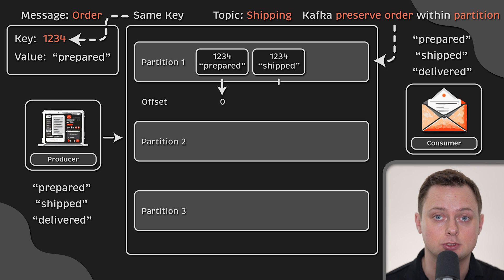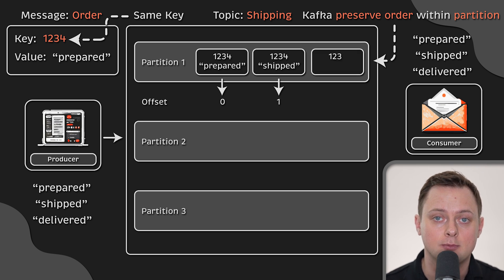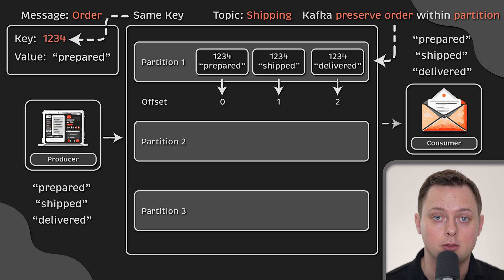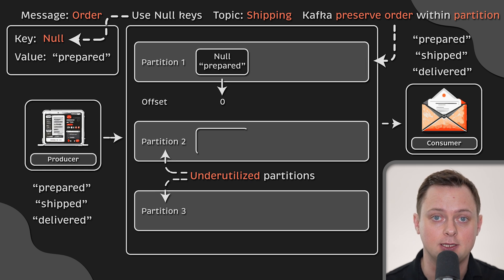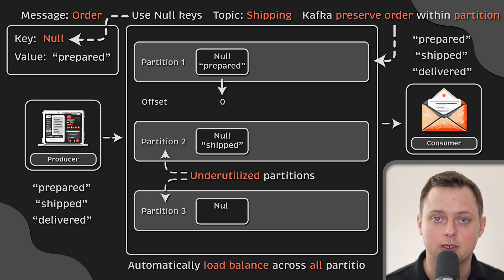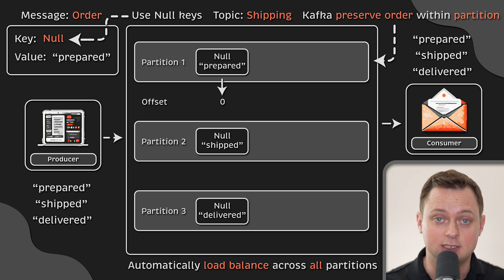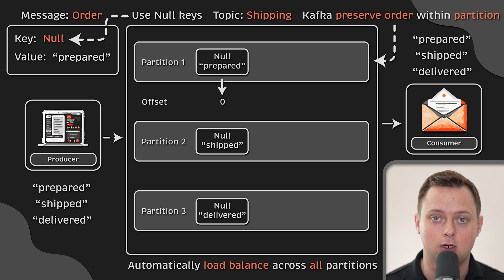However, this solution puts some constraints on the design of your Kafka solution and may potentially be a bottleneck when you decide to scale. We'll talk about this later when we get to parallelism. If you don't need to read messages in order, null keys are the easiest option. With null keys, the default partitioner will automatically load balance the messages across all available partitions. This means you won't have to worry about resizing your partitions.